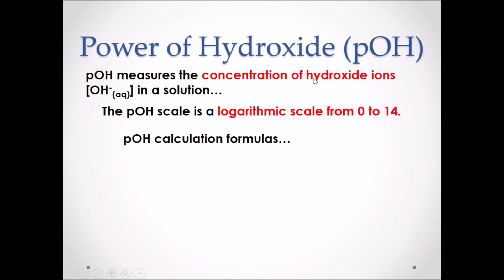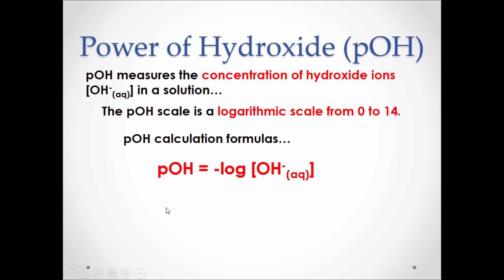The power of hydroxide, or pOH, is a measure of the concentration of hydroxide ions in a solution. The pOH scale is also logarithmic and goes from 0 to 14. A very low value, for instance 1, represents a very basic solution, while a high value, for example 13, represents a very acidic solution. The pOH calculation formulas are the same as pH: pOH equals the negative log of the concentration of OH⁻, which can be rearranged to the concentration of OH⁻ equals 10 to the exponent negative pOH.